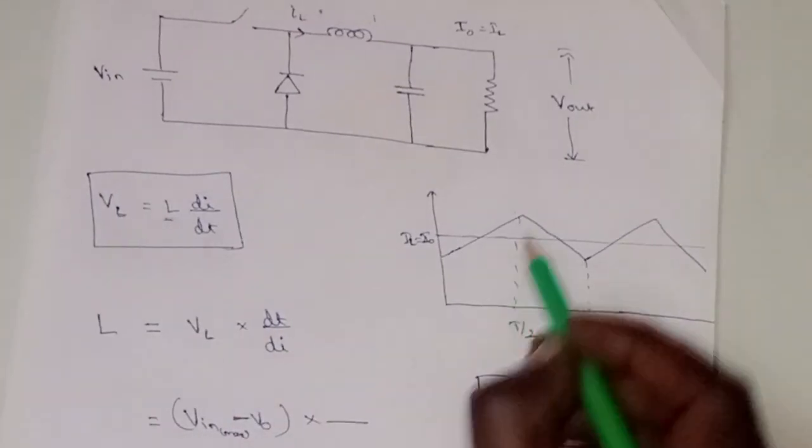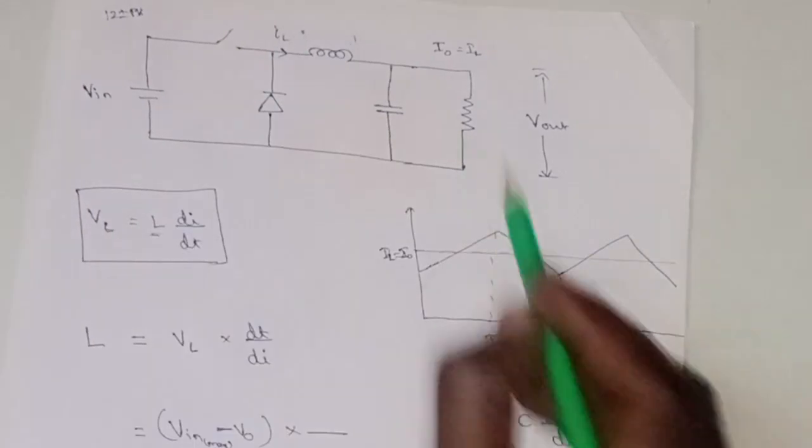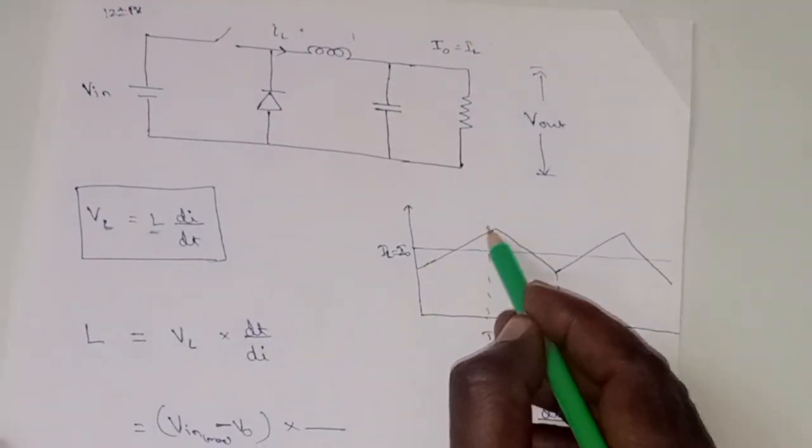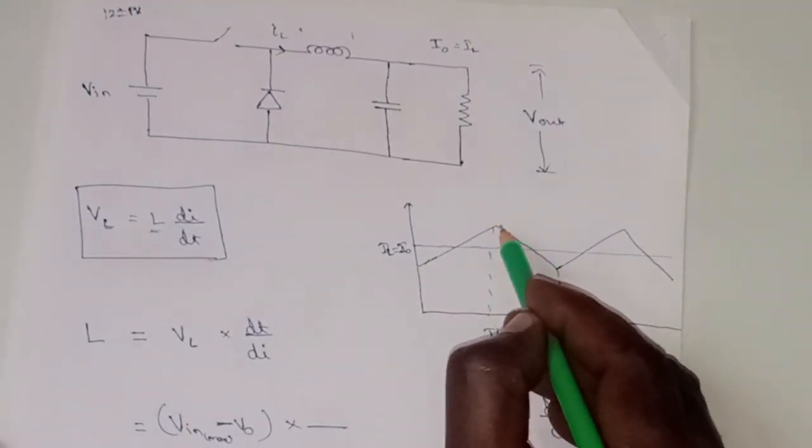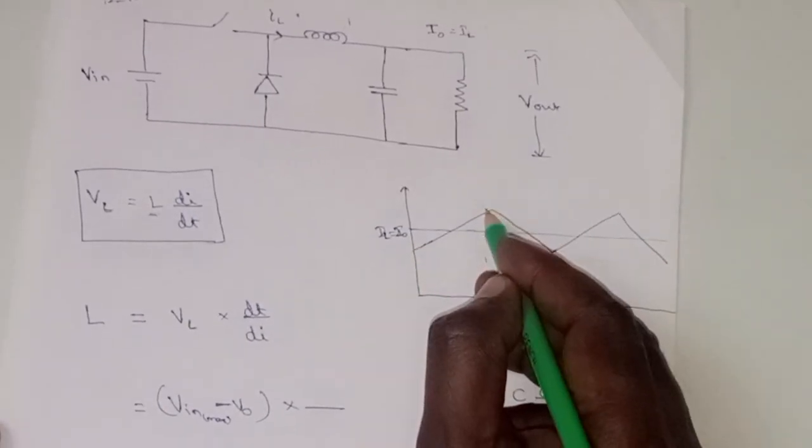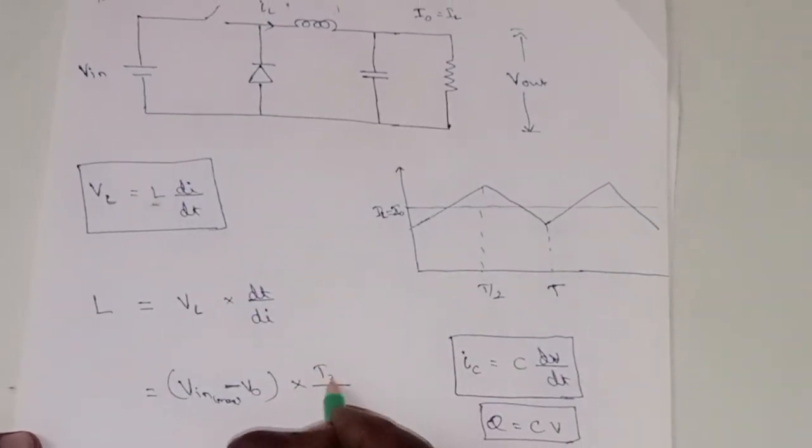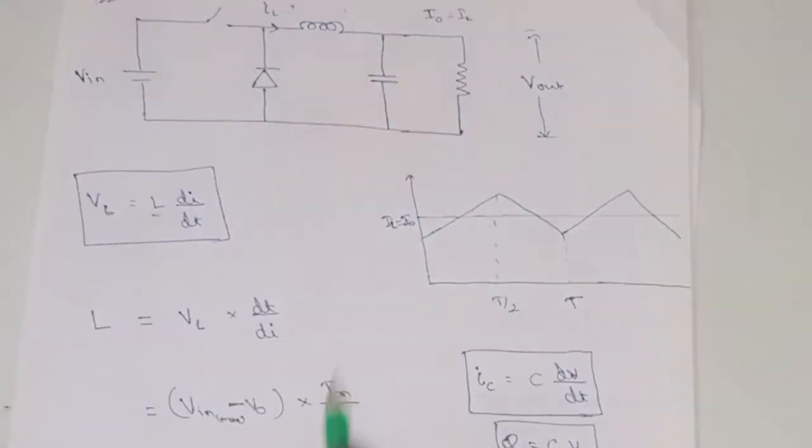So VIN minus VOUT into dt. dt is - see, during turn on time, we are saying that when switch is turned on, the current ramps up, right? And when it is turned off, current ramps down. So this is the on time, Ton time. So dt is the Ton, switch turned on time.